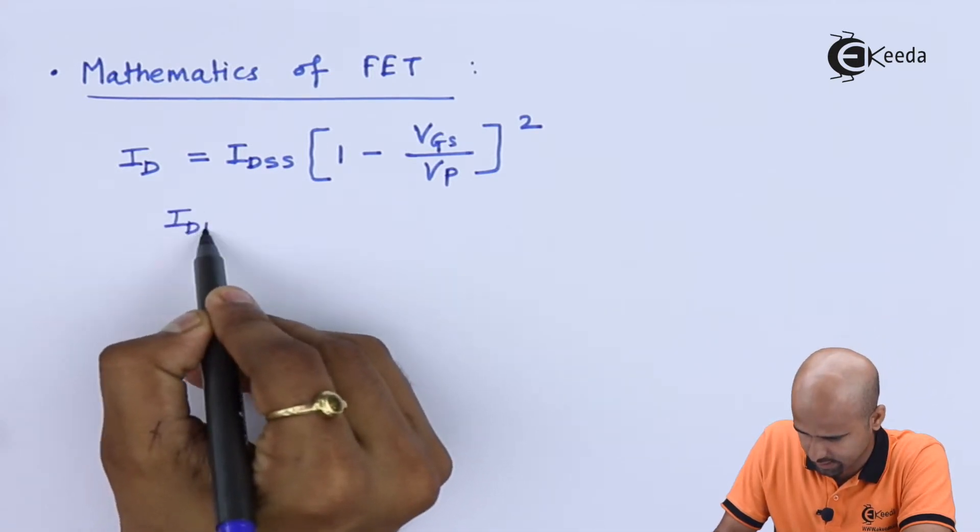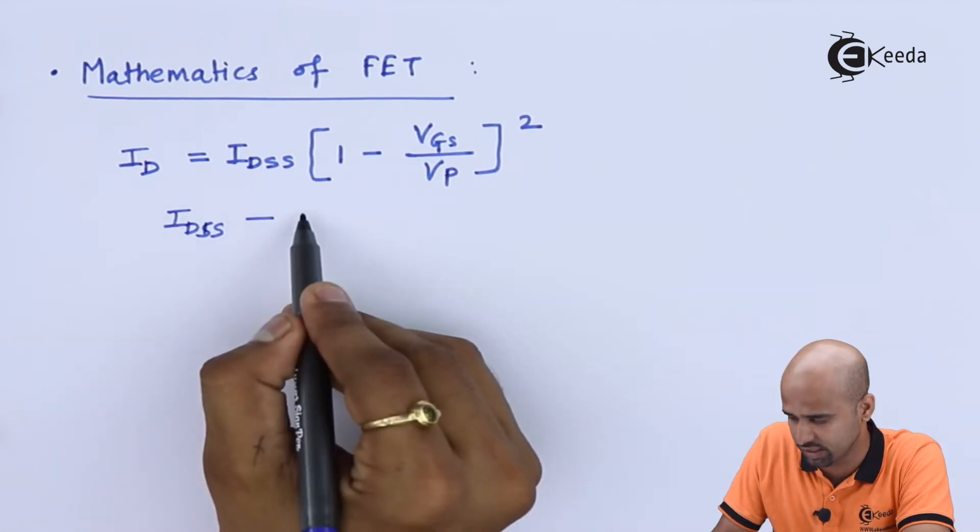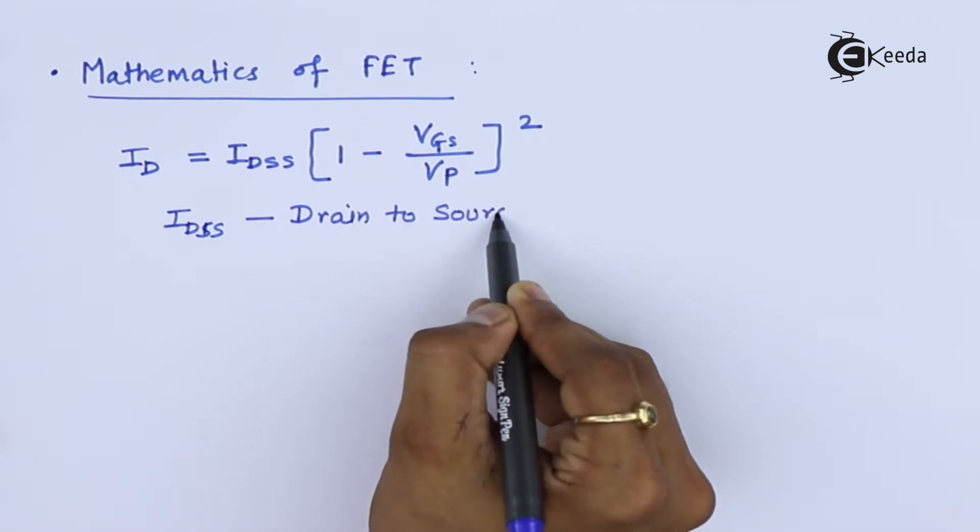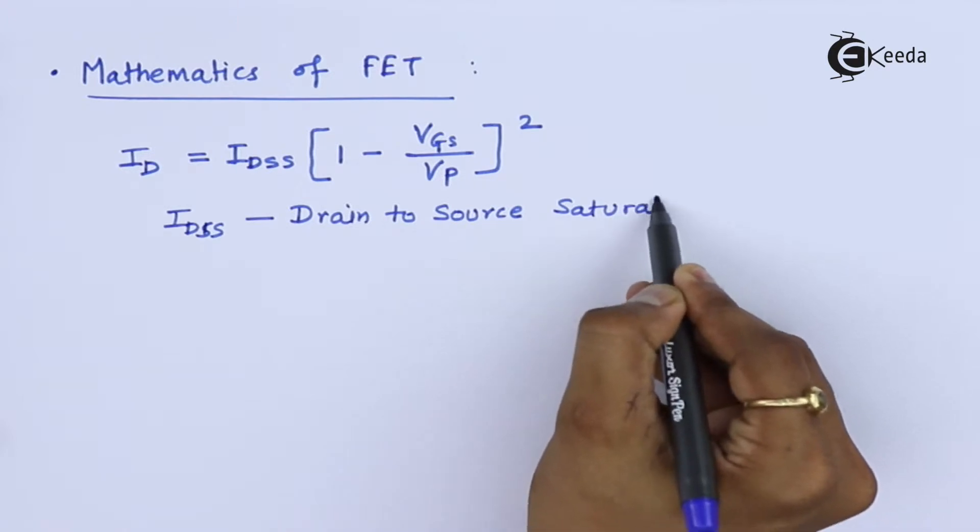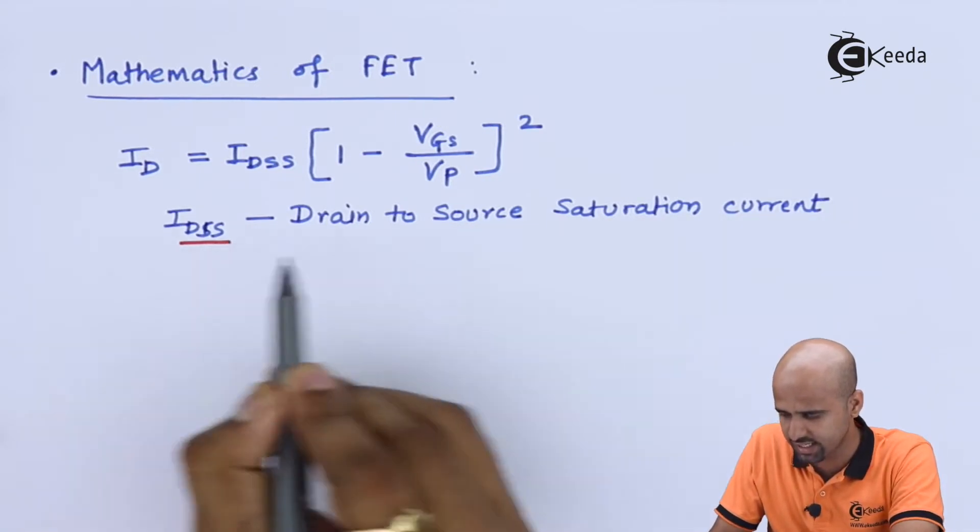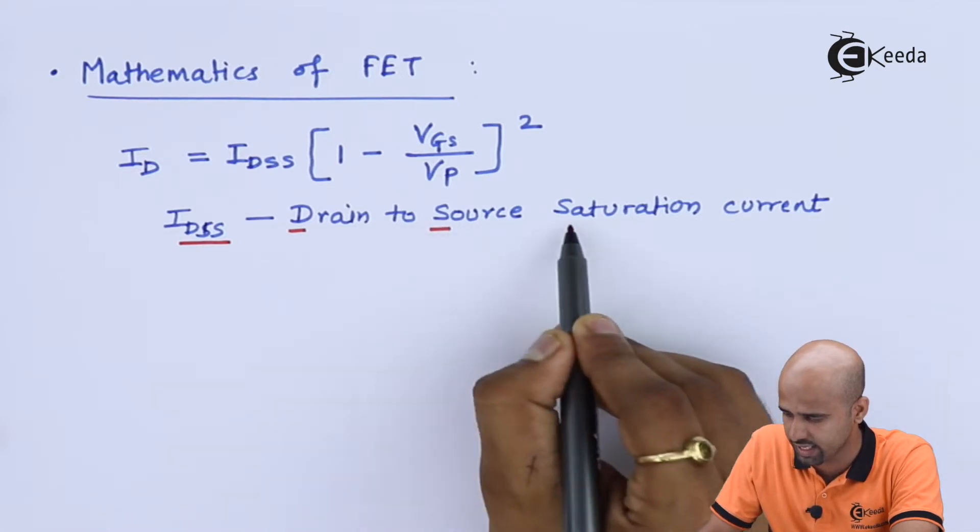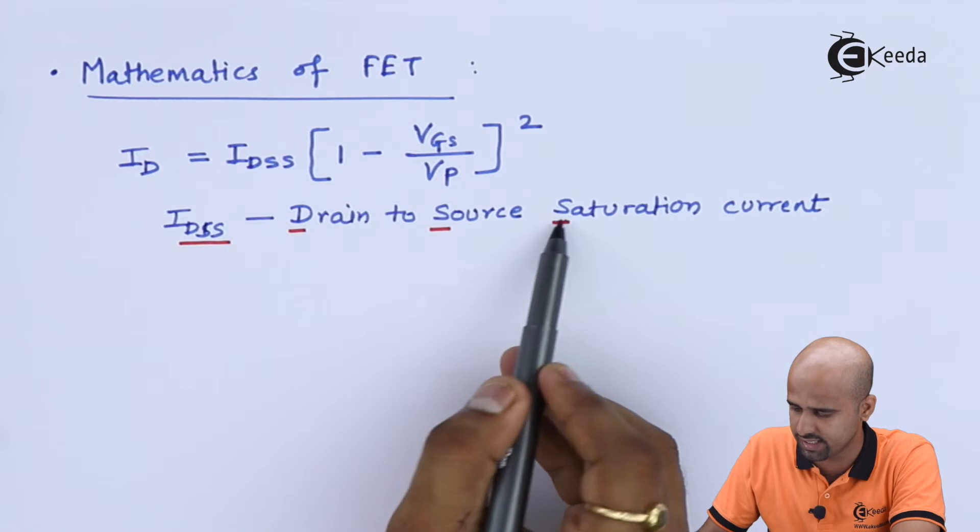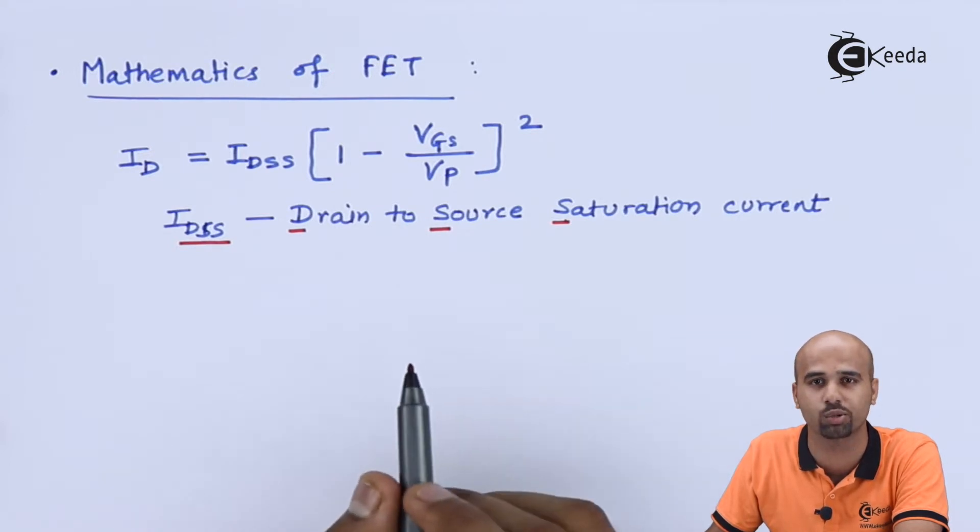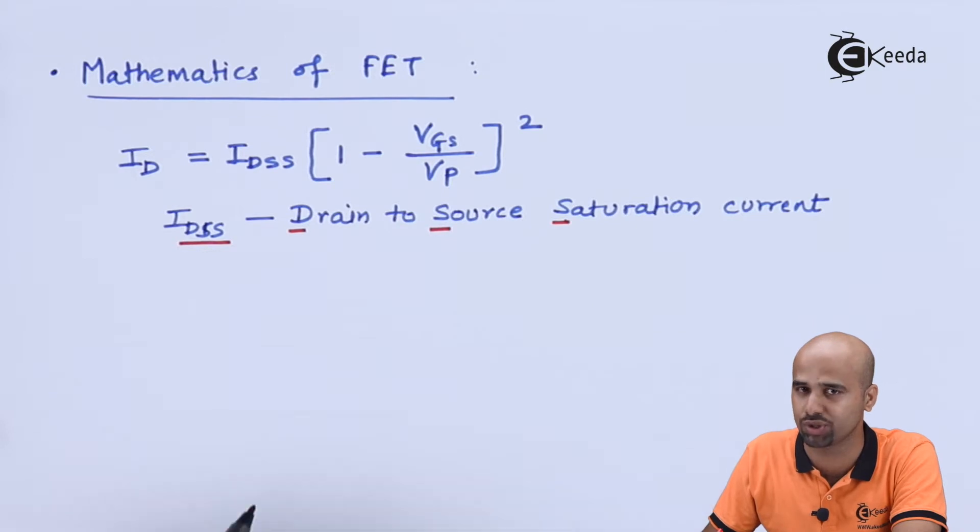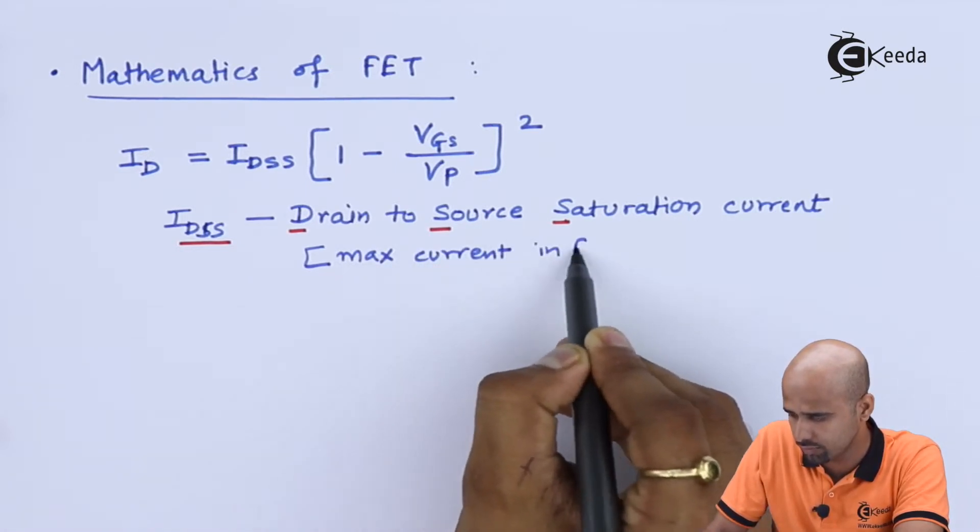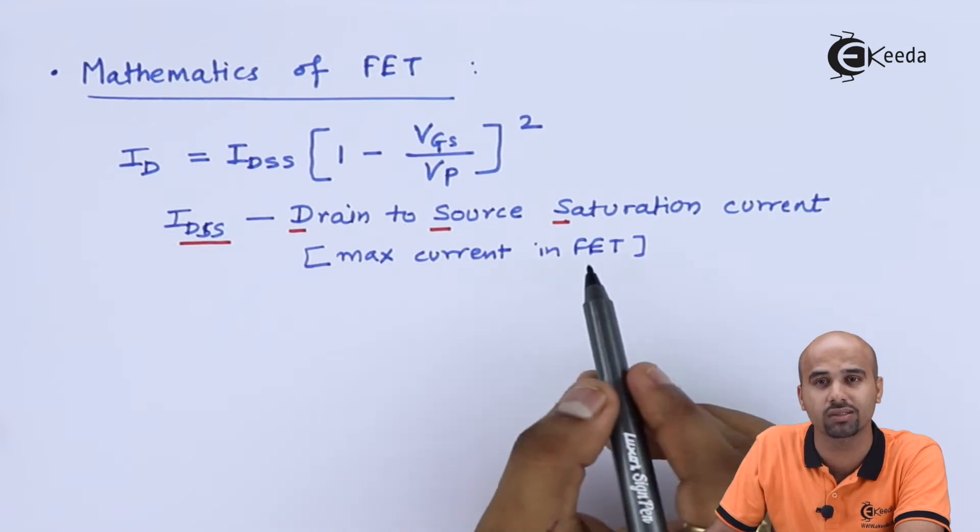This is called as Shockley's equation. So this equation we will incorporate for DC as well as AC analysis. And this IDSS is nothing but drain to source saturation current. It is a maximum value of the current flowing through FET when FET operated in saturation region. So I can say again this is nothing but max current and operating region obviously saturation region.